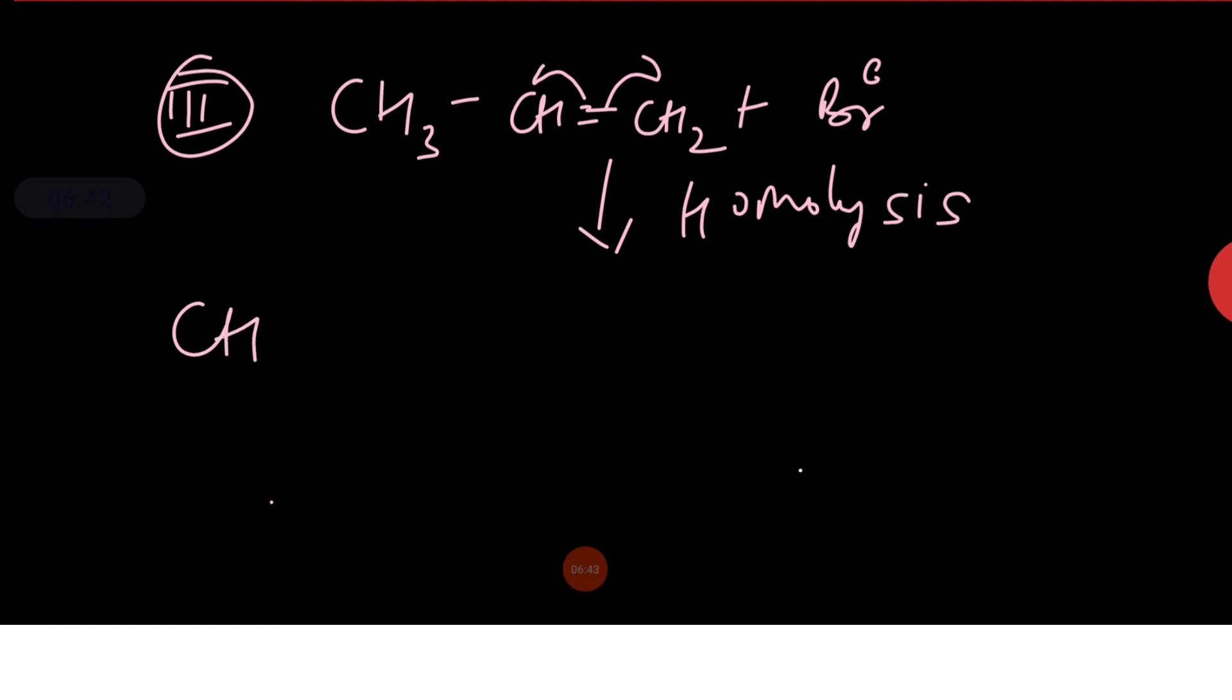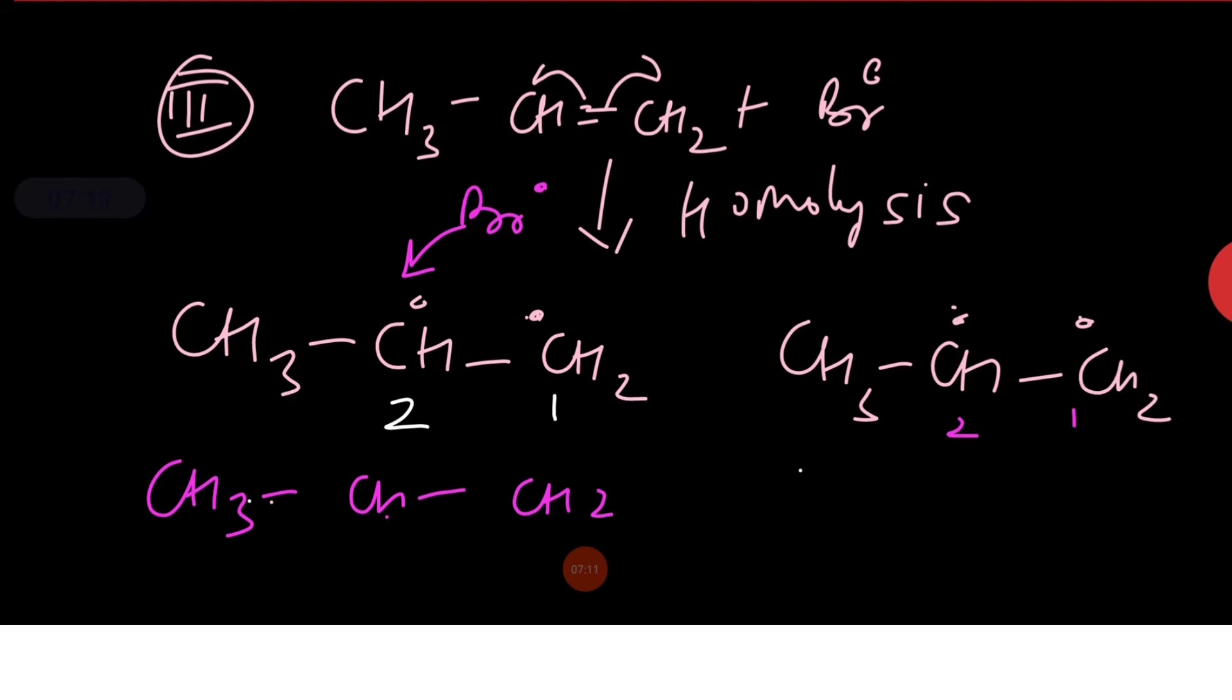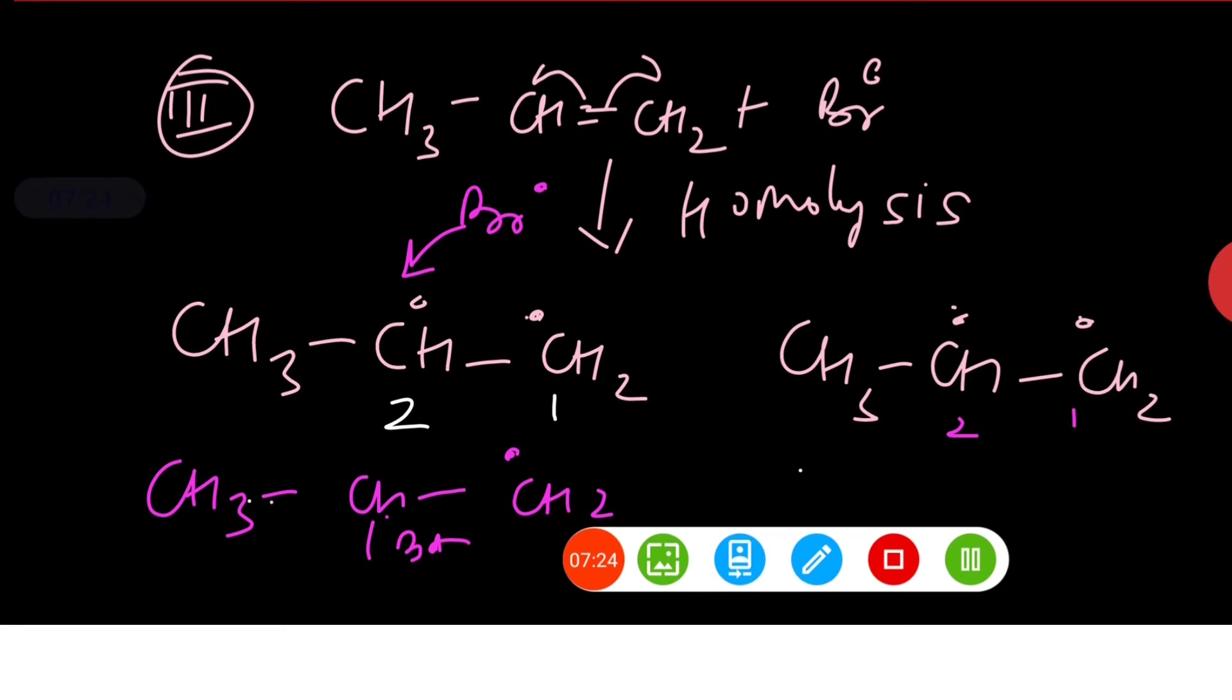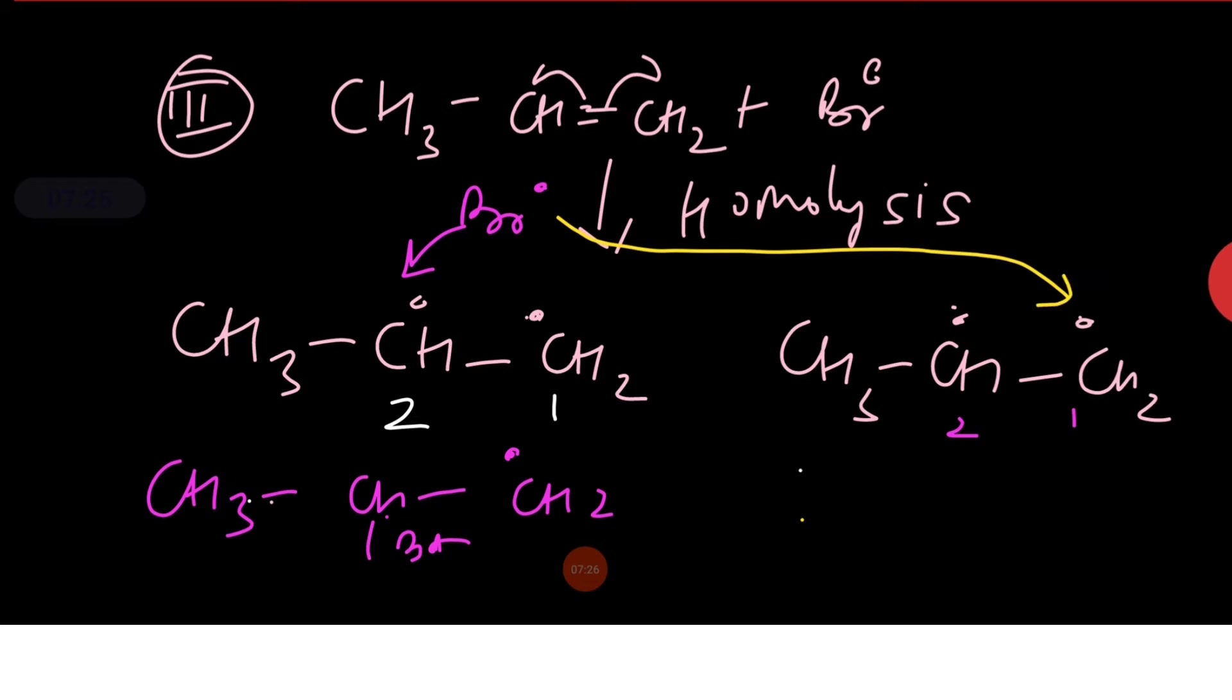So this is the homolytic cleavage of double bond. So there are two possibilities. If bromine free radical attacks on second carbon atom, then we get primary free radical, which is less stable. And if bromine free radical attacks on first carbon atom, then